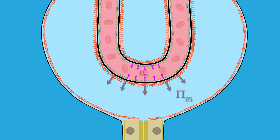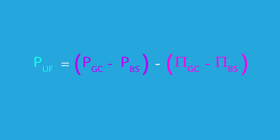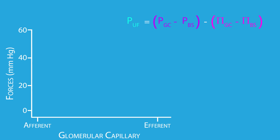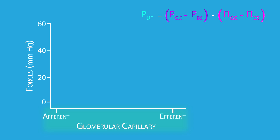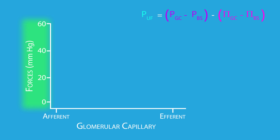Let's now describe each one of these four forces in greater detail and how they behave along the length of the glomerular capillary, which is shown along the x-axis. The forces will be shown along the y-axis and expressed in millimeters of mercury. As we do this, we'll use this equation to calculate the net ultrafiltration pressure.